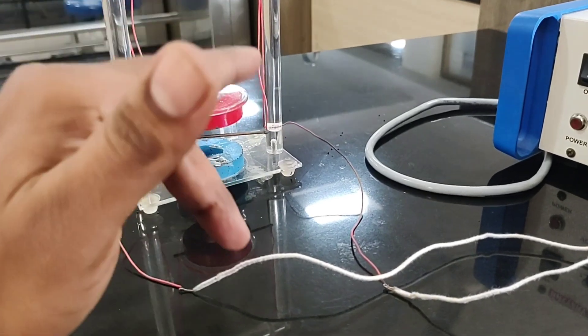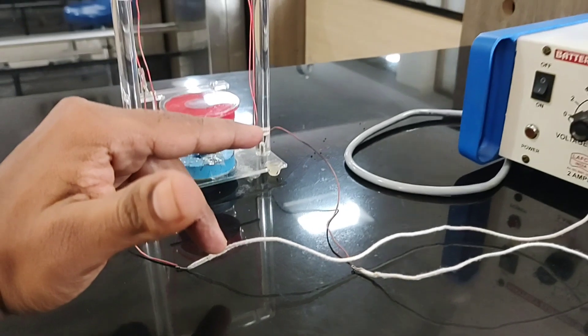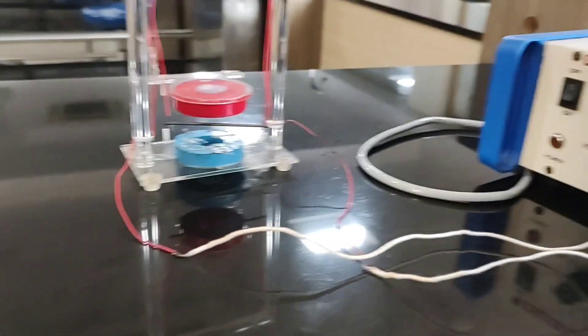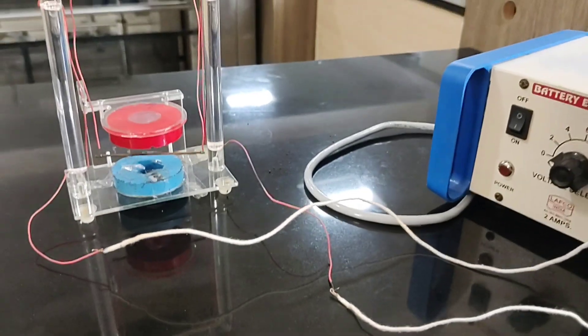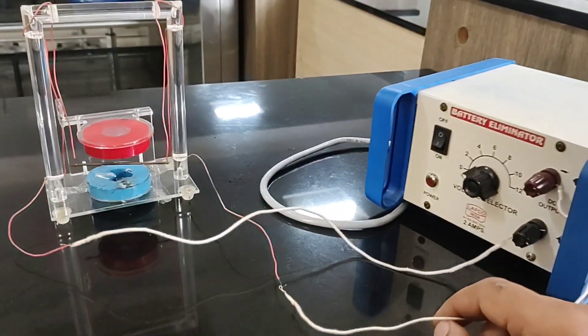Current, magnetic field, and thumb shows the direction of force. So we have already seen that it is moving vertically outward. Now let us see what would happen if I change the polarity, that means negative and positive terminals of the battery are interchanged.